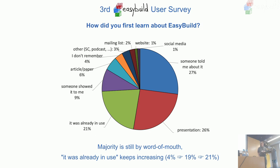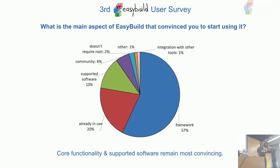We see a big increase of people saying EasyBuild was already in use when they changed jobs, so they rolled into the tool that way. The most convincing part about EasyBuild is basically the core functionality — the framework, what it can do: generating modules, automating software installations fully autonomously. People also run into complex software like OpenFOAM or TensorFlow that they want to install from source, and doing it manually gets depressing quickly.